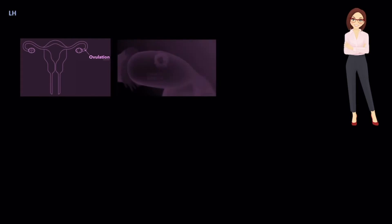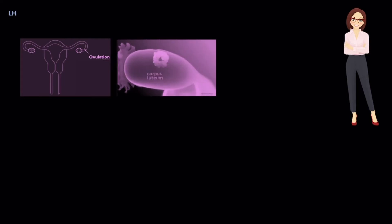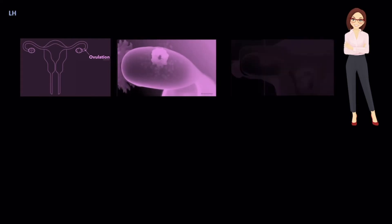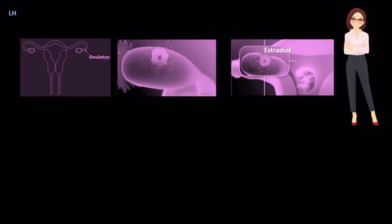In females, LH acts on the ovaries to trigger ovulation, stimulate the formation of the corpus luteum and stimulate secretion of estradiol and progesterone from the corpus luteum.